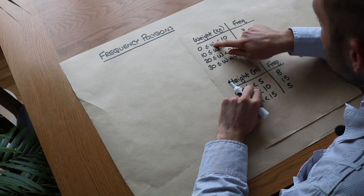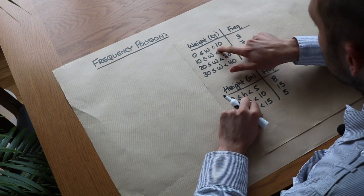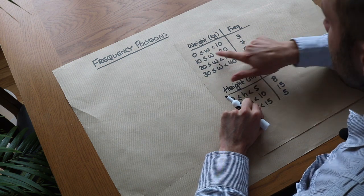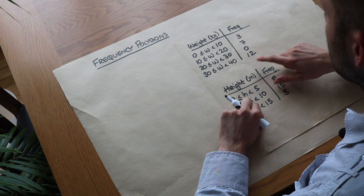We've got these different intervals here of weight, so we've got this interval where we've got three people with a weight between 0 and 10 kilograms, seven people of a weight between 10 and 20, etc.